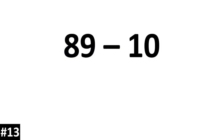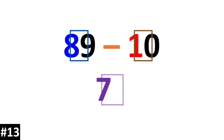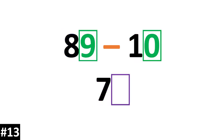89 minus 10. 8 10s minus 1 10 gives us 7 10s. We look to the ones: 9 minus 0 is 9. So our answer is 79.